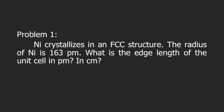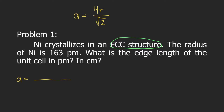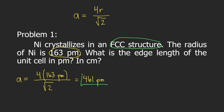The problem says that the unit cell has an FCC structure. The formula for the edge length, as mentioned previously, is 4R divided by square root of 2. In our problem, we are given R. The radius is 163 picometers. So, 4 times R — 163 picometers — divided by square root of 2. Grab your calculator and type the numbers, and you will get that A is equal to 461 picometers. This is the edge length in picometers.